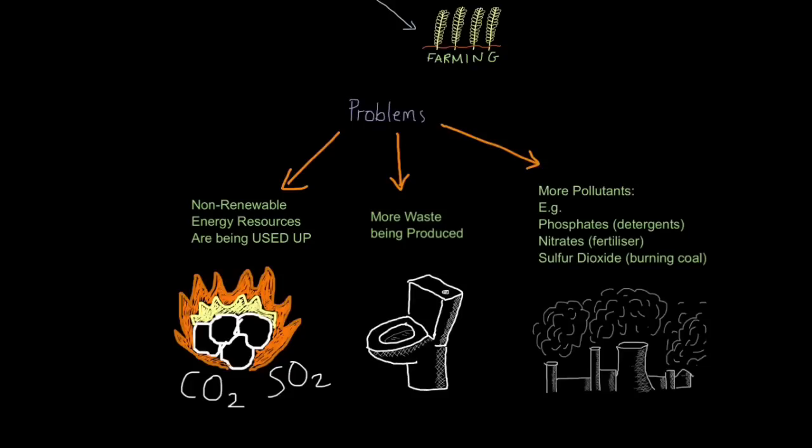And finally, no matter what we do, us humans seem to love creating pollution. And there'll be a lot more of it if we don't control our population growth. So more pollutants, for example, more phosphates, which you find in detergents or laundry detergents, more nitrates, which you find in fertiliser, more sulphur dioxide, which we get from burning coal which contains sulphur. Sulphur dioxide, by the way, leads to acid rain. Nitrates, well, it causes eutrophication, and we'll look at that in more detail in a bit.